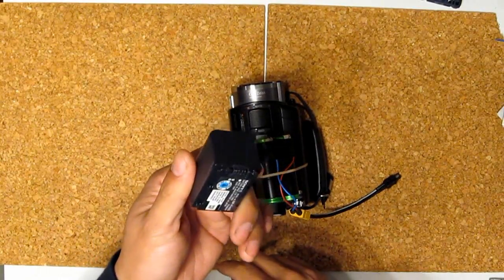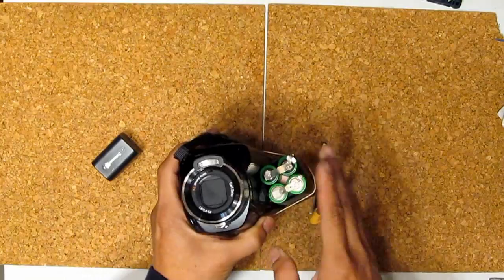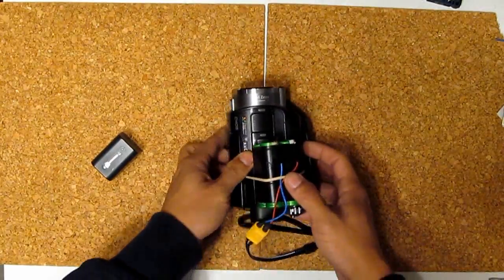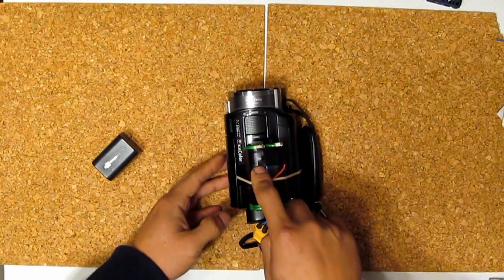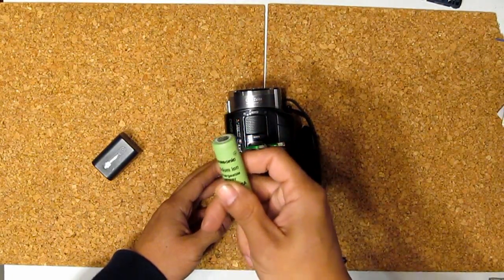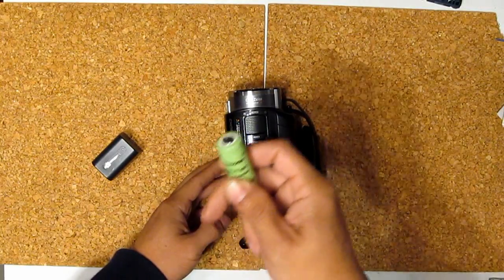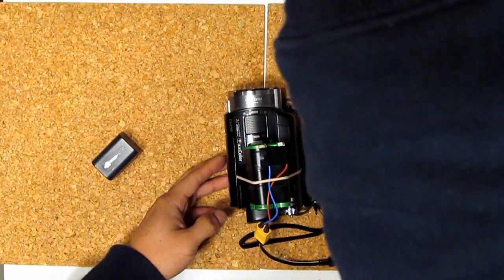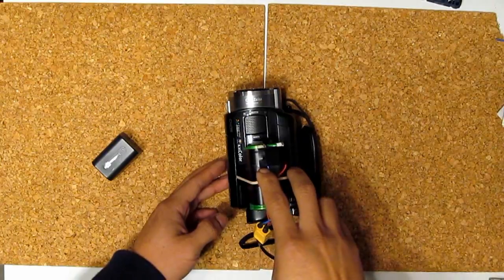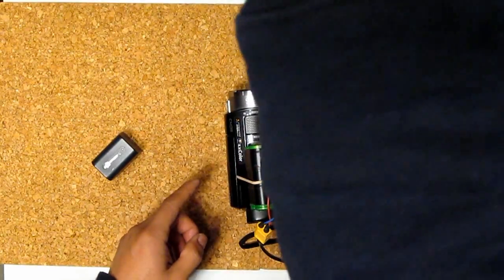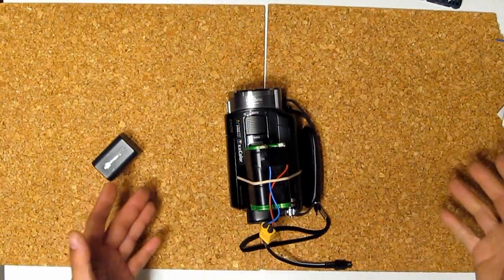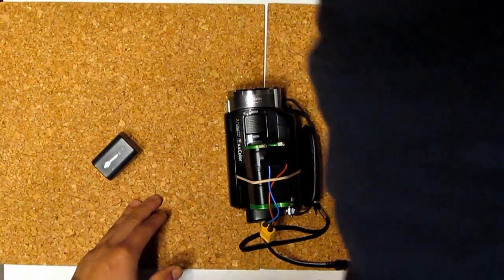So this pack here is 4 times as much as this. If this lasts for 40-45 minutes, this pack here lasts for 3 hours. And this is a low capacity 18650 cell. If I use something like this, Panasonic 18650 cells, this cell is 3400 milliamp-hours. And 4 of these is going to be like what, one and a half times more than this, which is, if this is 3 hours, 4 of the Panasonic is going to be about 4 and a half to 5 hours.